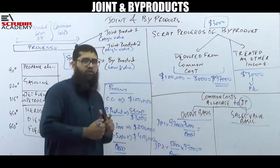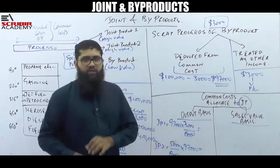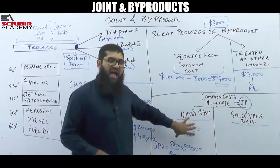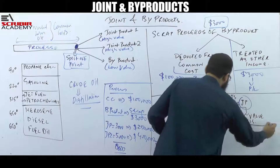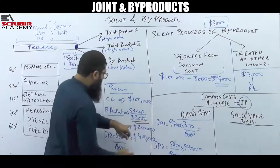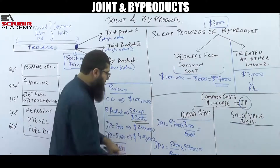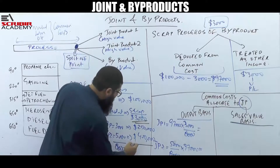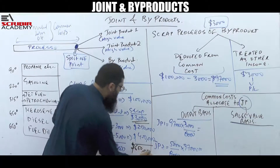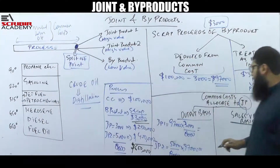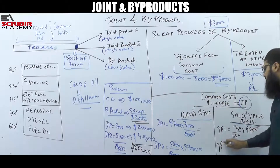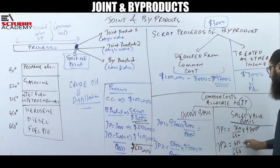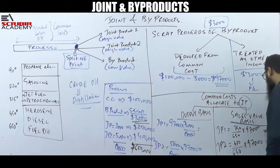Alternatively, allocation can be done on the basis of sales value. The sales value of joint product 1 is $250,000 and joint product 2 is $400,000, giving a total of $650,000. Joint product 1 gets $97,000 × ($250,000/$650,000), and joint product 2 gets $97,000 × ($400,000/$650,000). This is how common costs are apportioned on the basis of sales value.